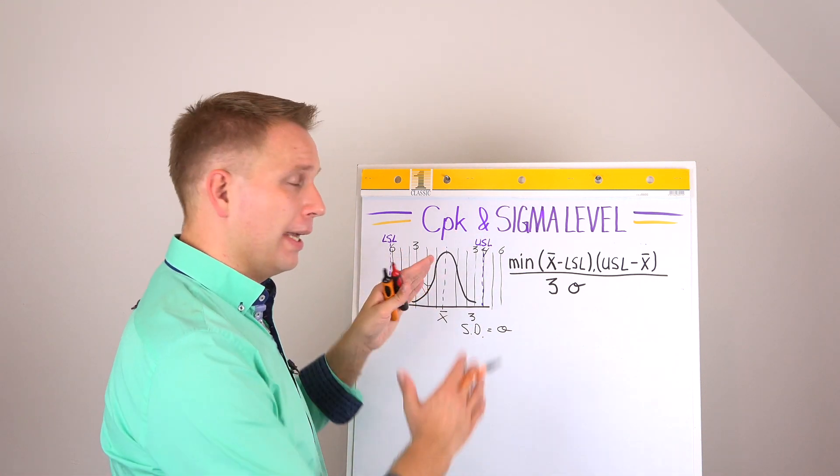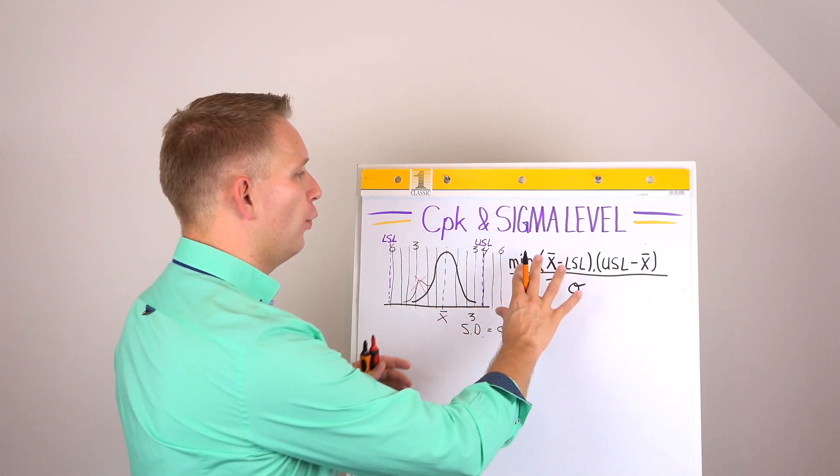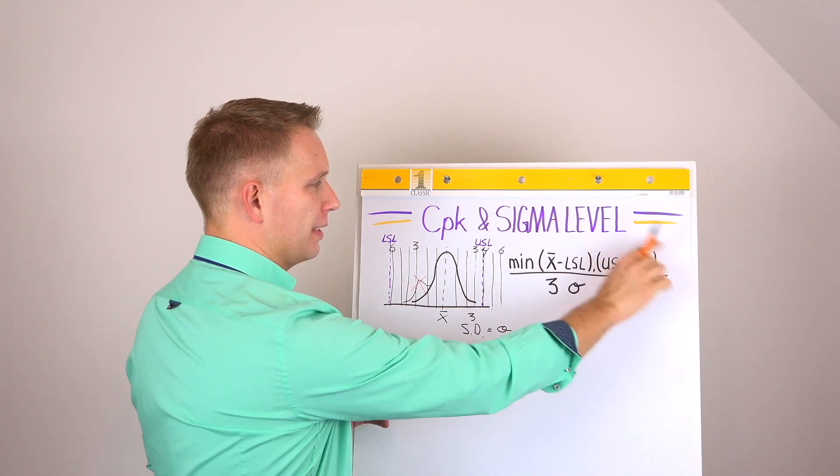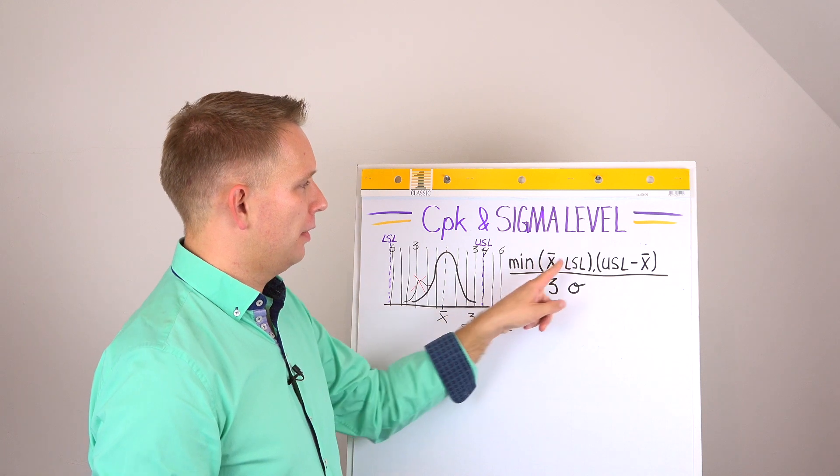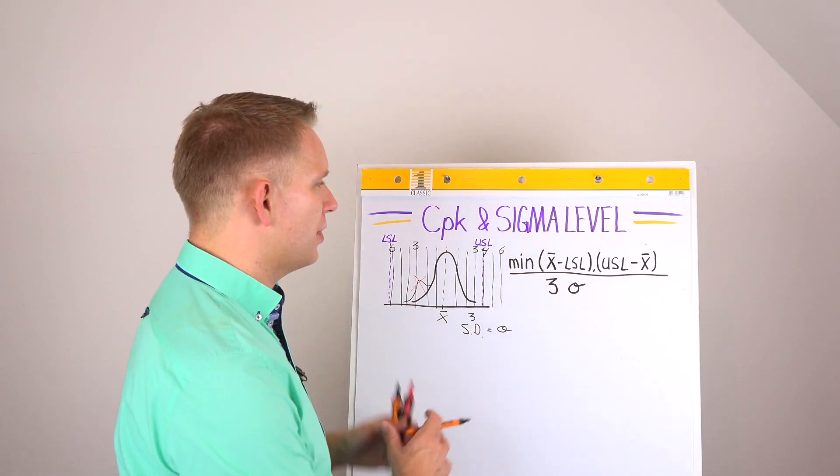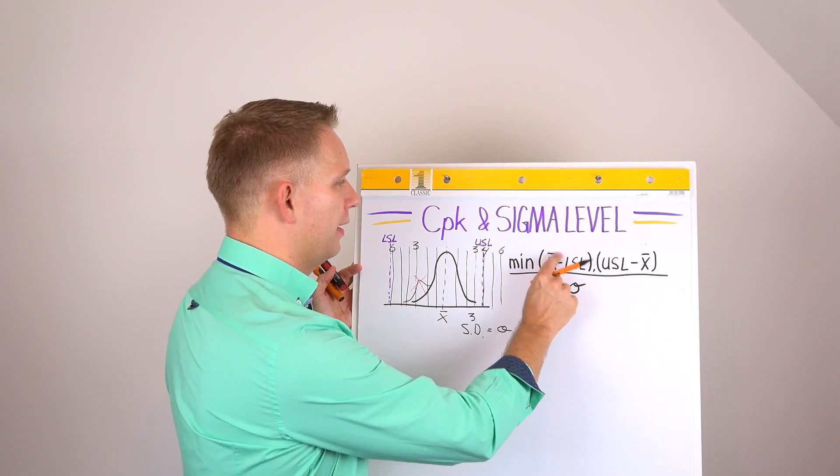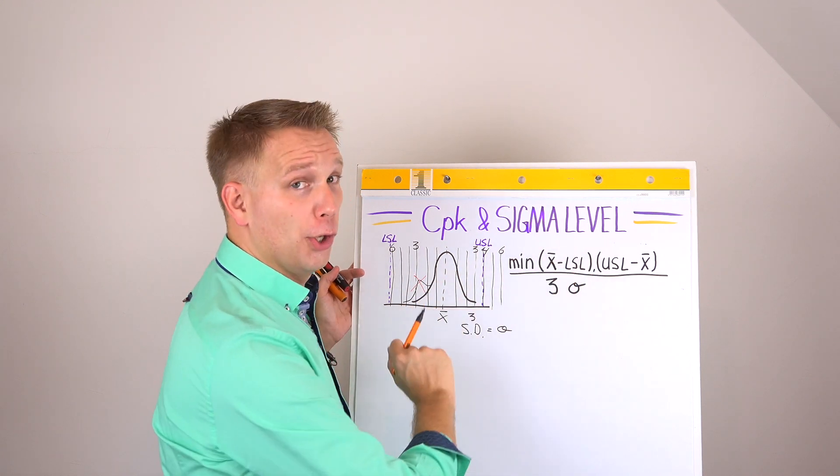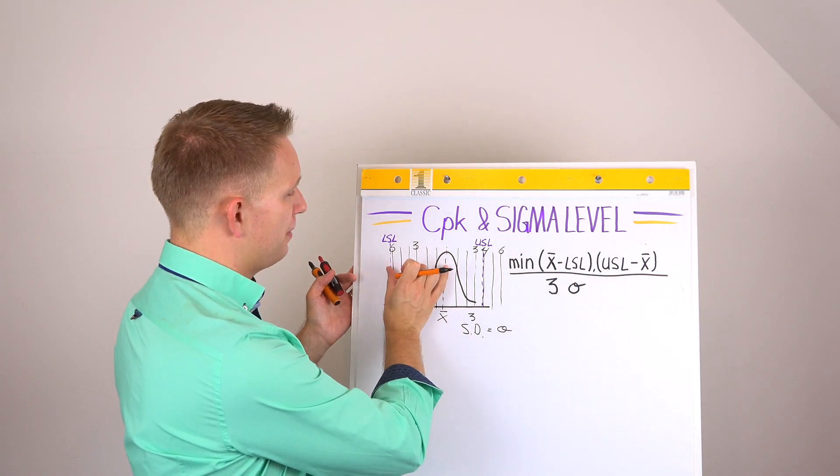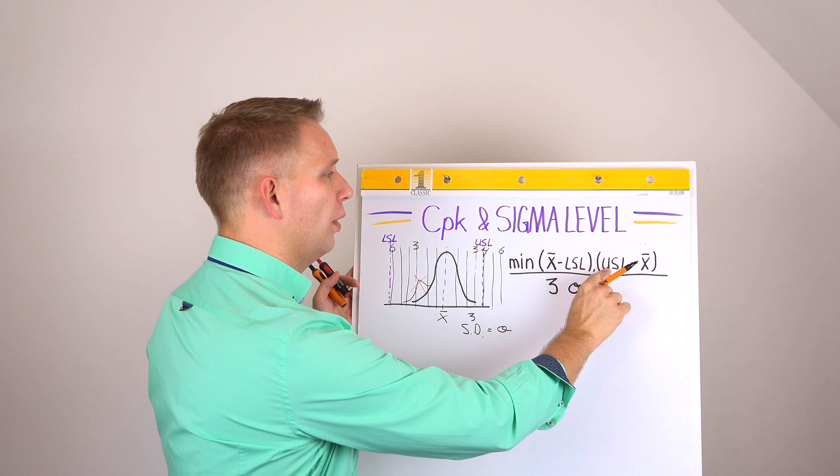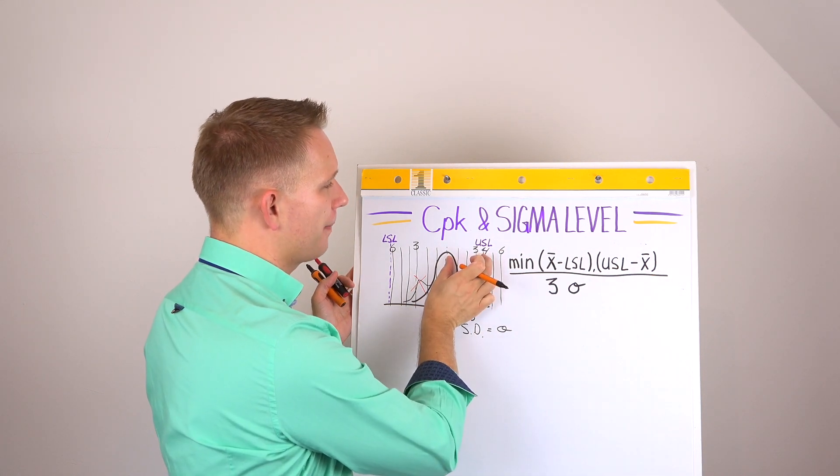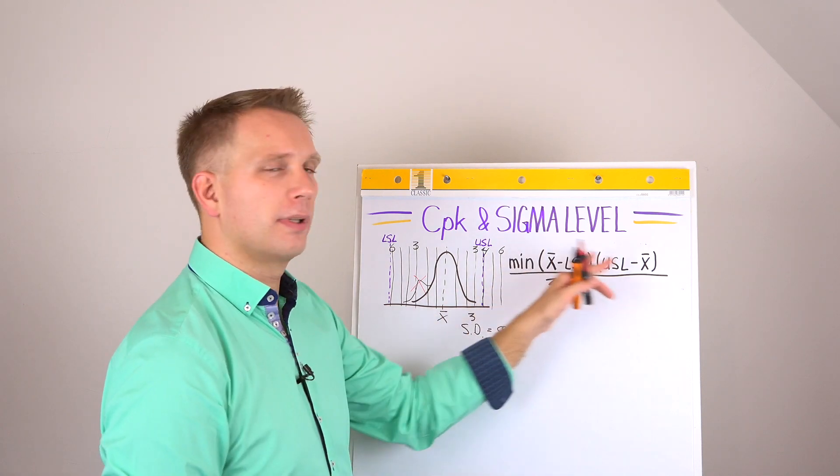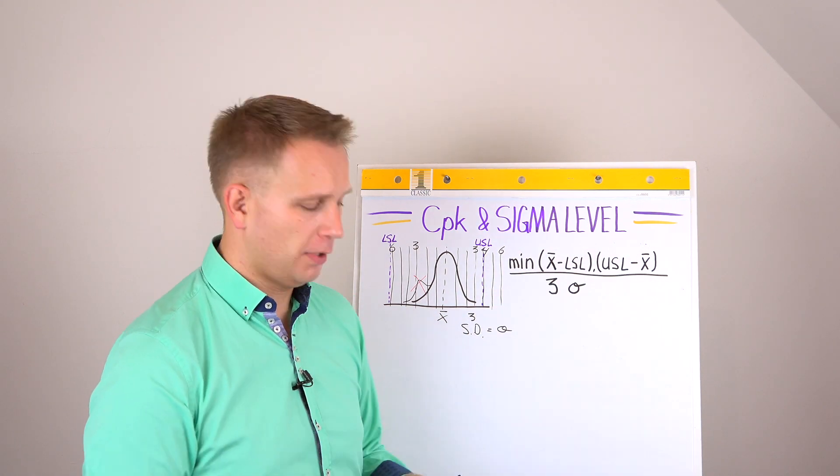Now, this is also the input for our CPK formula. This is the CPK formula where we check the minimum of these two. So let's explain those first. So either the mean minus the lower specification limit, this part here, or the upper specification limit minus the mean. So this part here. And we choose the lowest of these two, the minimum of these two.